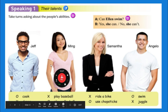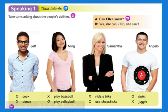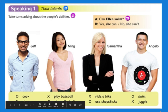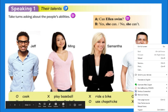Now we're going to look at some people: Jeff, Ming, Samantha, and Angelo. We're going to ask questions about their abilities. An ability is something that you can do — everyone has a different ability. A checkmark means the person can do it; an X means they can't. Can't dance. Can't play baseball. Can play volleyball. Can use chopsticks. Can't ride a bike.